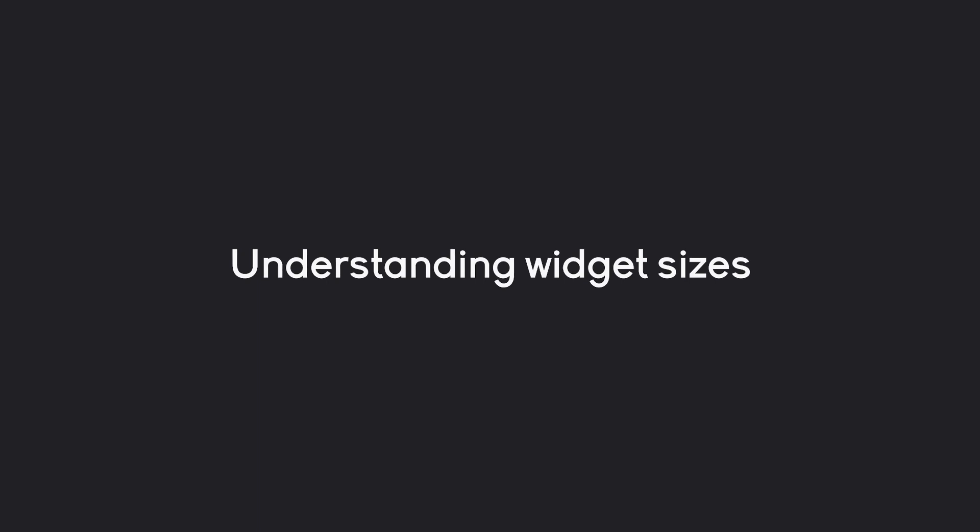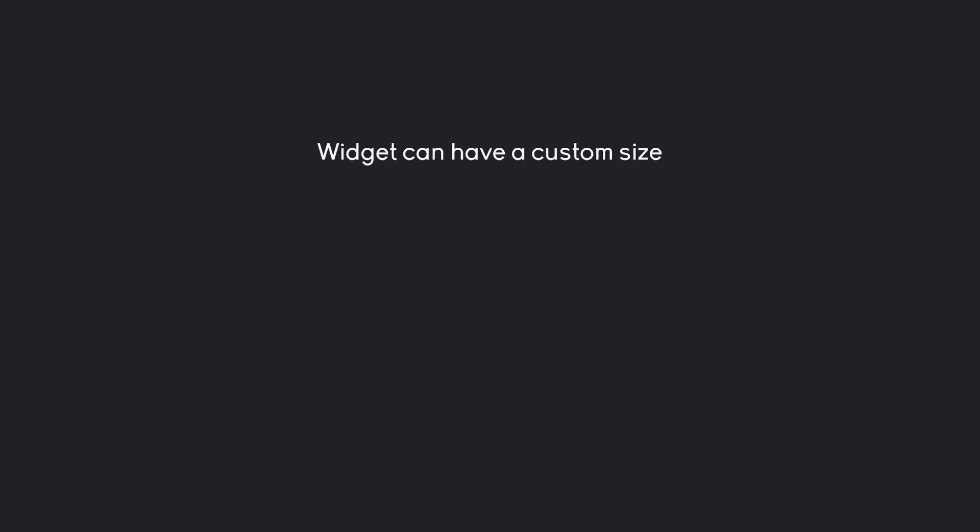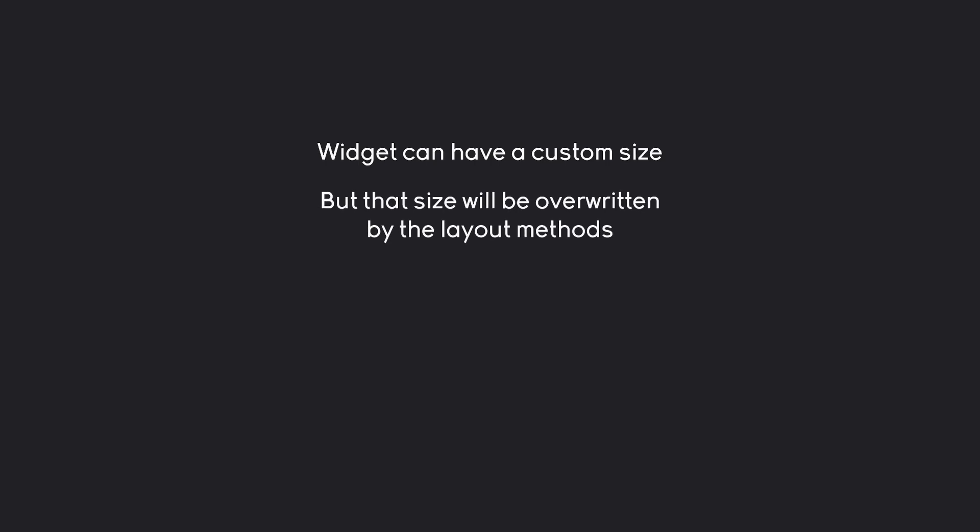There's one important issue that you have to understand about TKinter layouts, and that is the widget sizes, because that can be a tiny bit tricky. In TKinter, every widget can have a custom size. However, what you also have to understand is that this size will always be overwritten by the layout methods. You basically have two places where you can add a size of a widget, but one is prioritized.